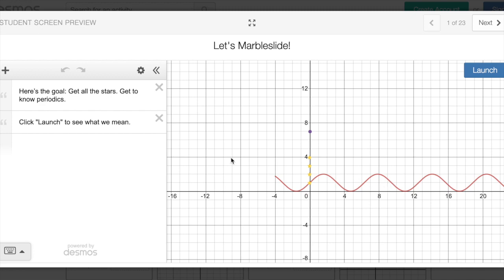these marbles are going to drop and they're going to follow our path that we have made by our graph. In this case, they are waves, and I think most of them are sine waves for this one. So when I hit launch, you notice it collects all the stars on its way down. That's what we're looking for.